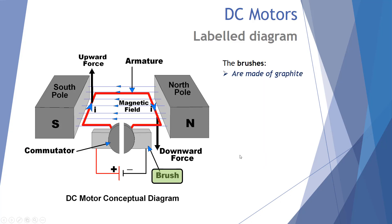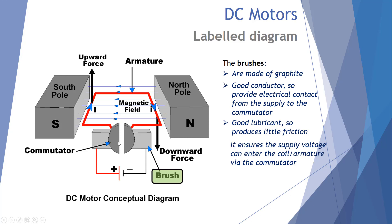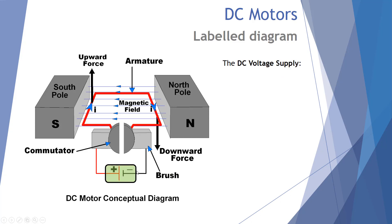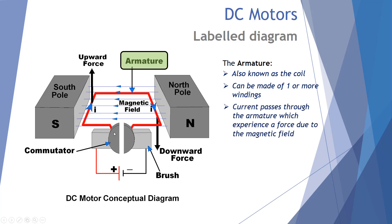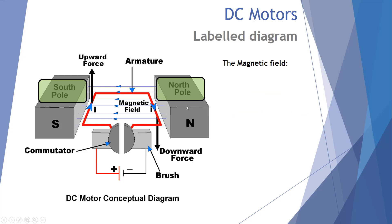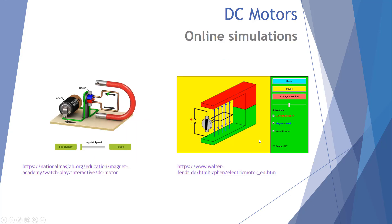The brushes are made of graphite, which is a great conductor, providing electrical contact from the supply into the commutator to the coil. Graphite is also a good lubricant, producing little friction and allowing smooth contact. The DC voltage supply produces direct current that enables the whole system to work. The armature, also known as the coil, can be made of one or more windings — current passes through it, experiencing a force due to the magnetic field, and it rotates. The magnetic field can be made by permanent magnets or electromagnets.